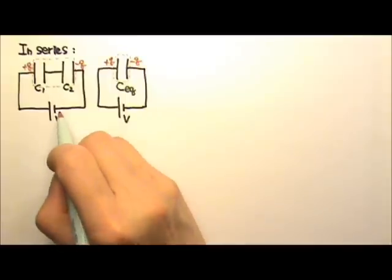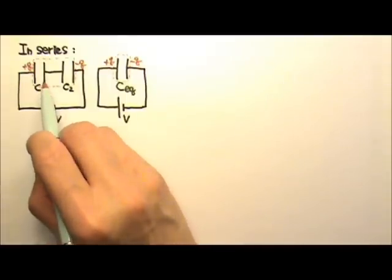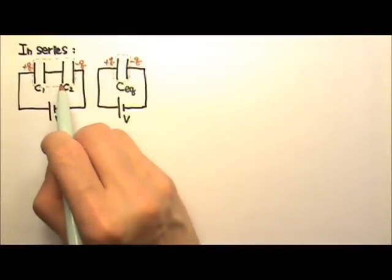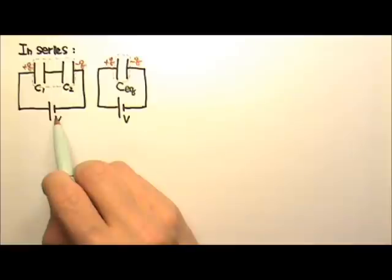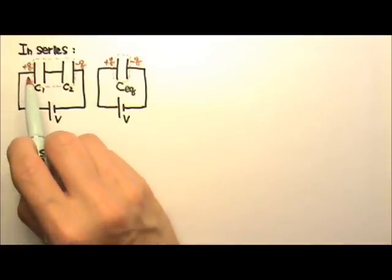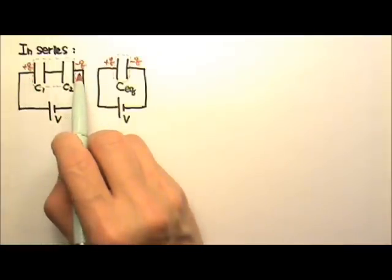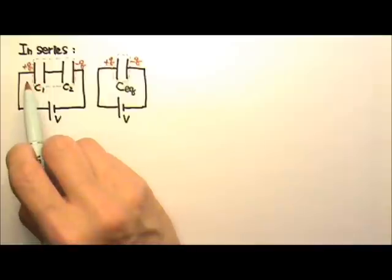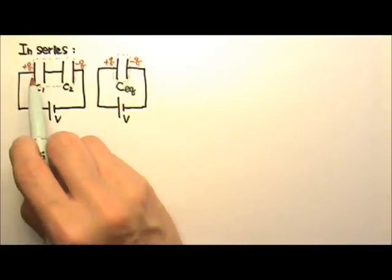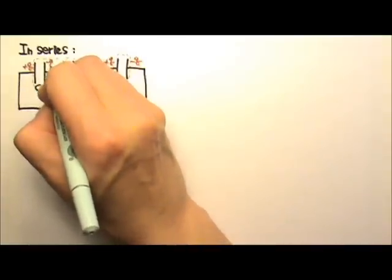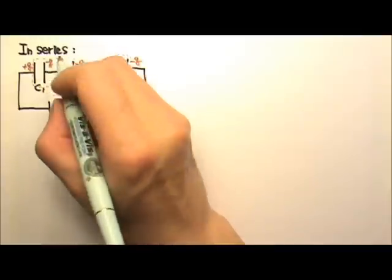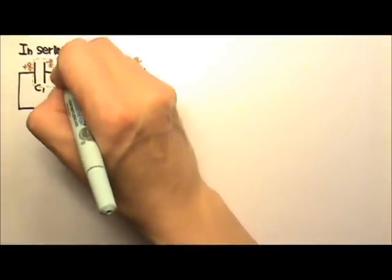Of course, this battery cannot pump any charges onto these two plates, because there is no conducting path between these two plates and the battery. However, the positive Q and negative Q here can induce a charge separation in here. The positive Q attracts negative charges, so this plate ends up with a negative Q, and the other plate ends with a positive Q.